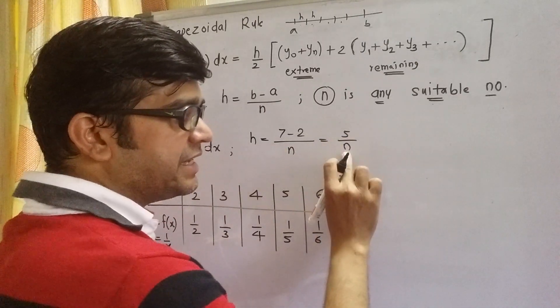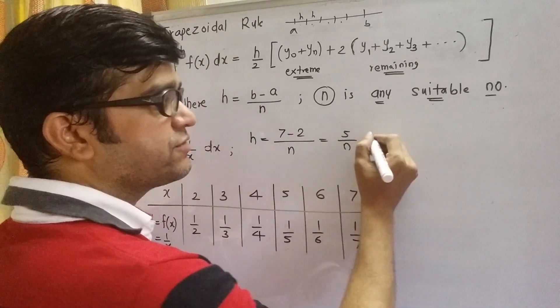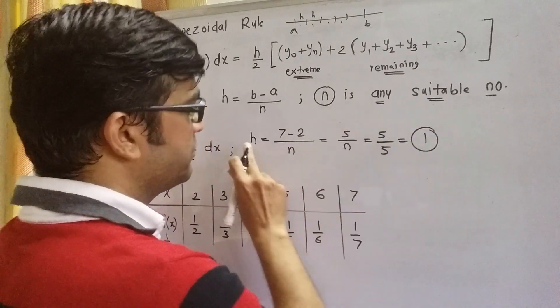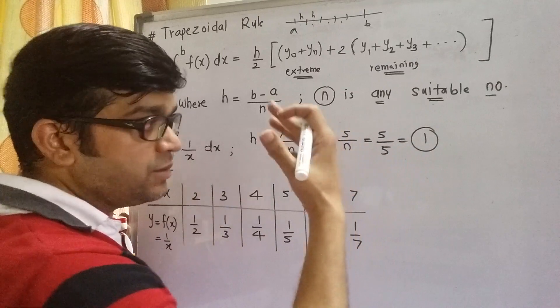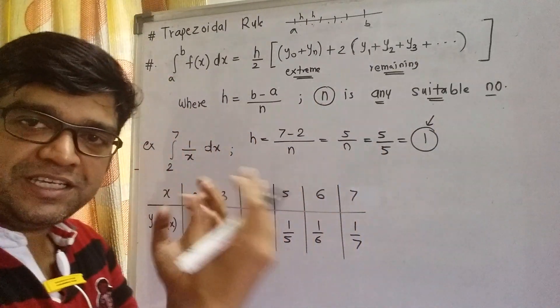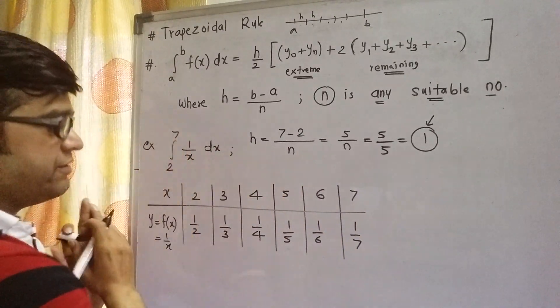Now look at 5 by n. What I will take as n? Let us take n as 5, because if n is 5, then h will be 1. Width of each interval is going to be 1, so it will be very easy to work out between 2 to 7.